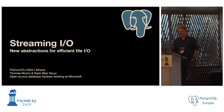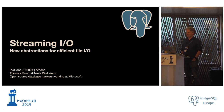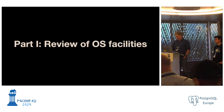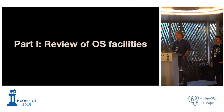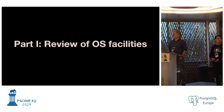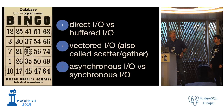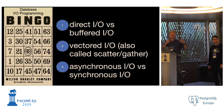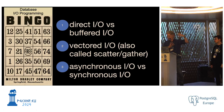Thank you. Thanks for coming to our talk. I'm going to start with a bit of a review of some operating system facilities that are relevant to databases, and in particular, how they access files. I've got this bingo slide here where there's these three things that go together: direct.io, vectored.io, and asynchronous.io. Hopefully by the end of the talk, you'll understand why all of these three things go together really nicely and why we're interested in all three of them.